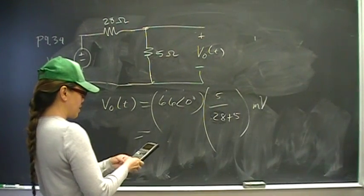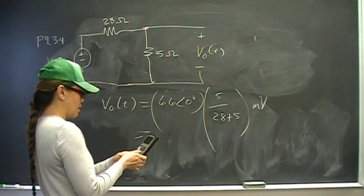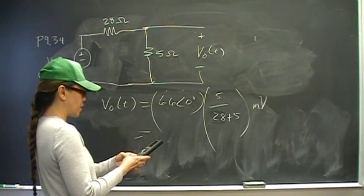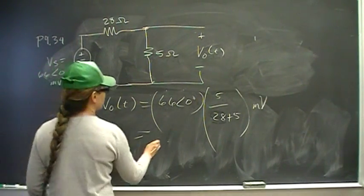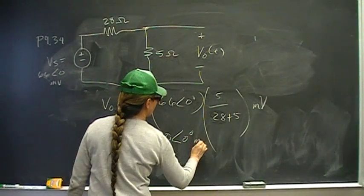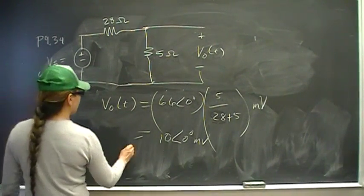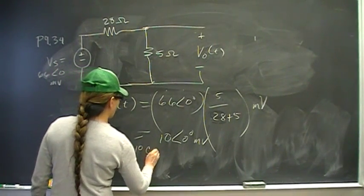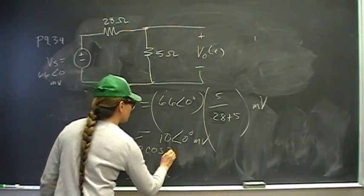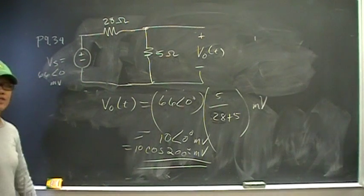So we take 66 times 5 divided by 33. The magnitude is going to be 10 angle 0 millivolts, or the way we want to express that is going to be 10 cosine 200t millivolts, and that's the answer.